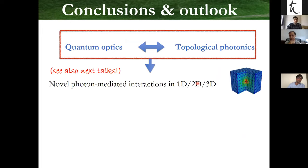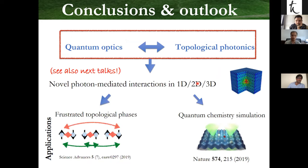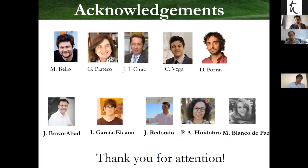In summary, I think there is a lot of nice physics to explore connecting quantum optics and quantum emitters coupled to topological photonic modes. I have discussed mostly the shape of novel photon-mediated interactions in 2D and 3D — the next talks also discuss 1D and 2D settings. One can also explore what kinds of novel many-body phases emerge, and we have used these long-range photon-mediated interactions to simulate quantum chemistry problems. Thank you for your attention.